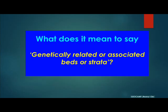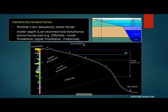When we say genetically related or associated beds, what does that mean? When two or three beds are genetically related, that means they obey Walter's law — in terms of environment of deposition, they are side by side to each other. Their water depth or environment are transitional from one to the other; you're not jumping two or three environments of deposition or a very large water depth to get to the other.